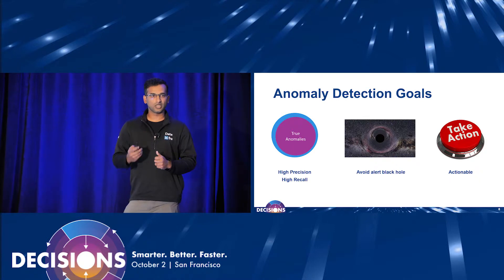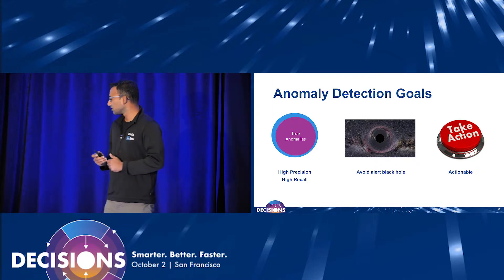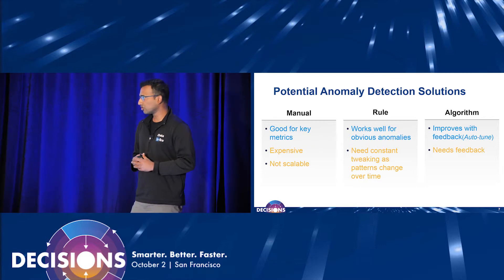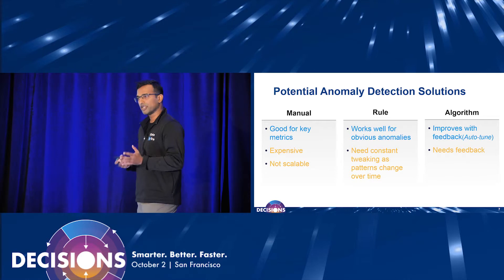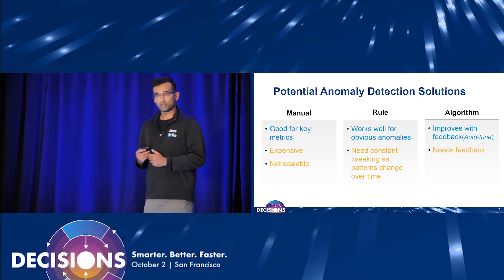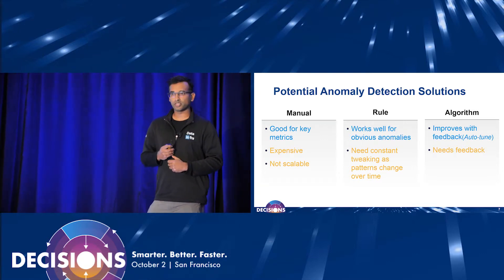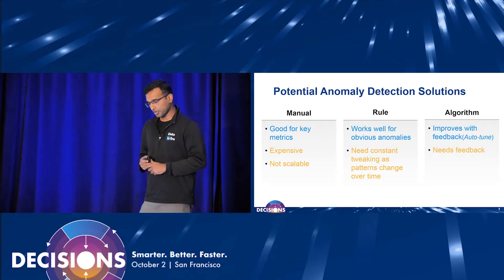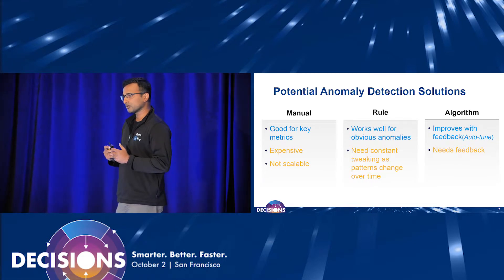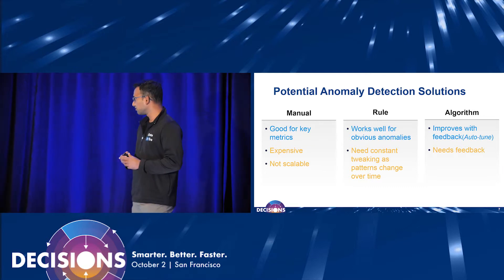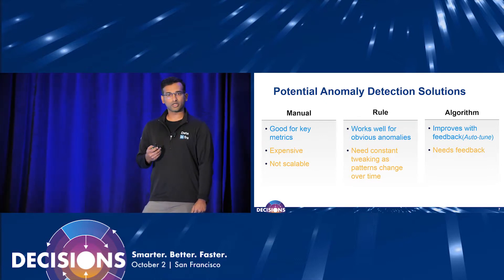There are different types of methodologies for anomaly detection. Manual monitoring is typically where everyone starts — it works very well for key business metrics, and even today at LinkedIn there are a few metrics we continuously monitor manually. Rules work very well in the beginning — you can set very obvious rules, like 'anything that drops by 50% is bad.' And the last one is algorithms, which work very well and learn over time, but that's also a drawback because it takes a long time to learn.